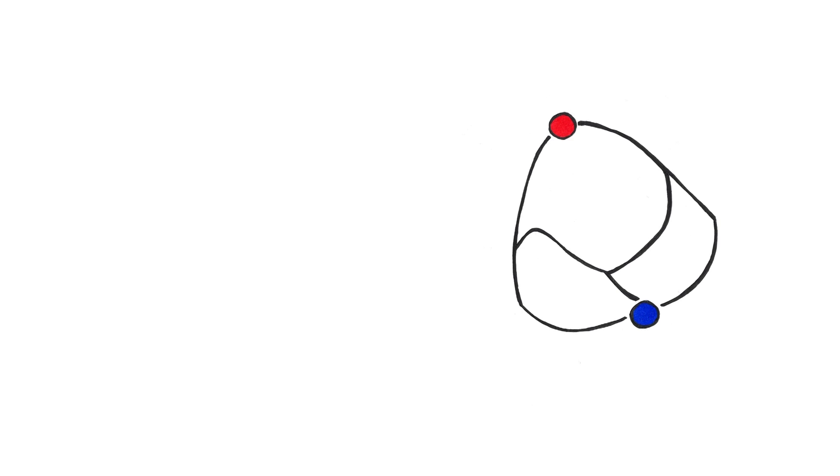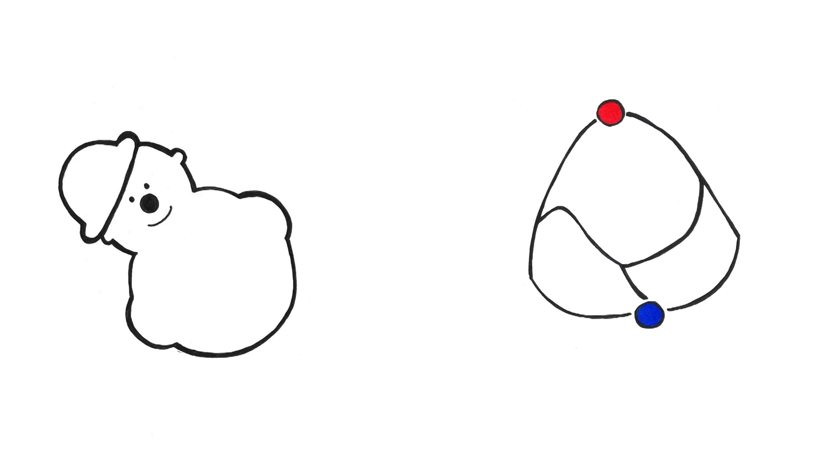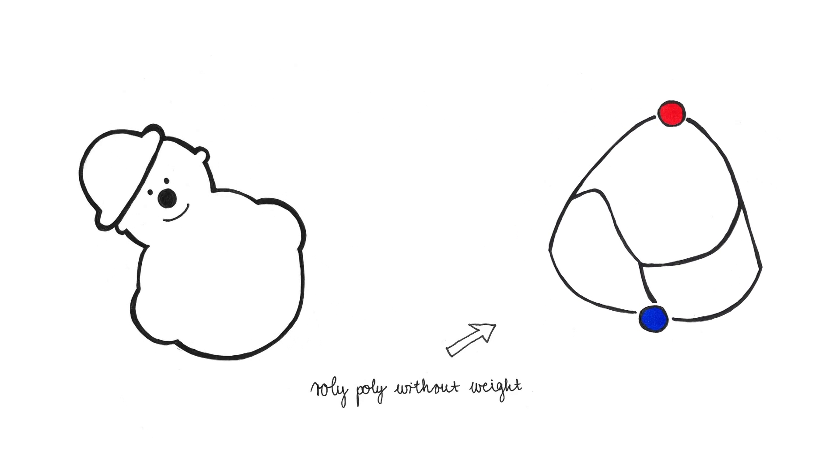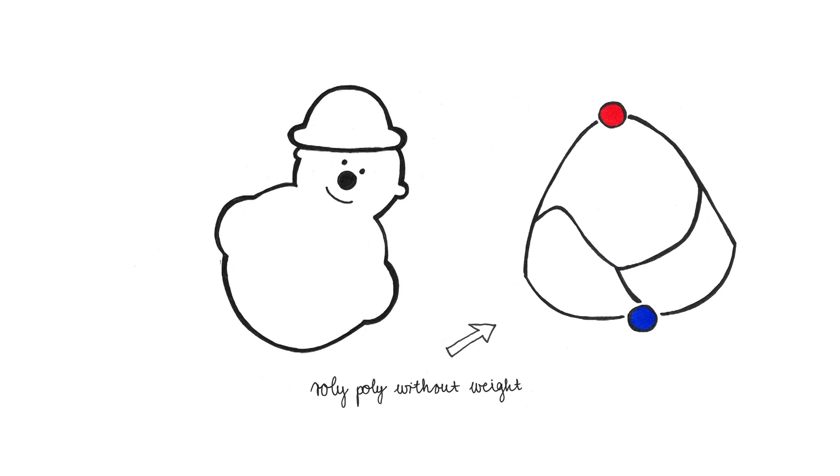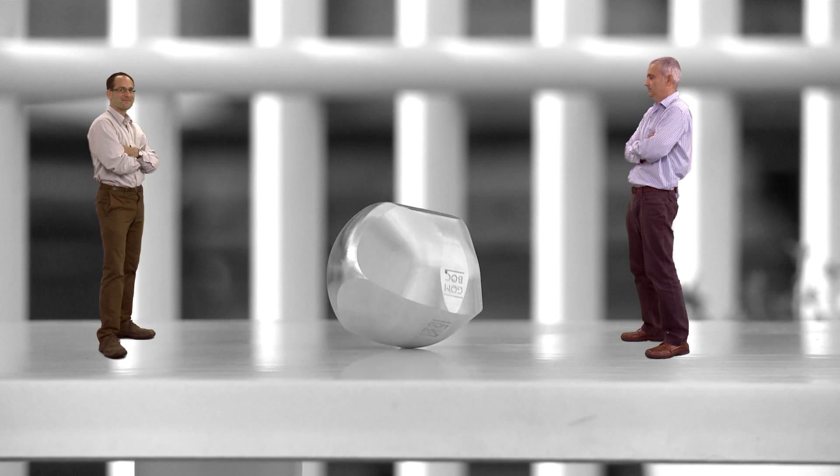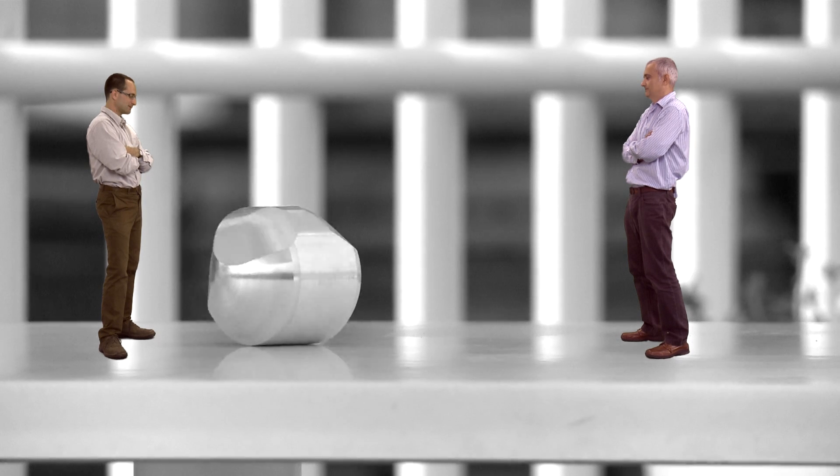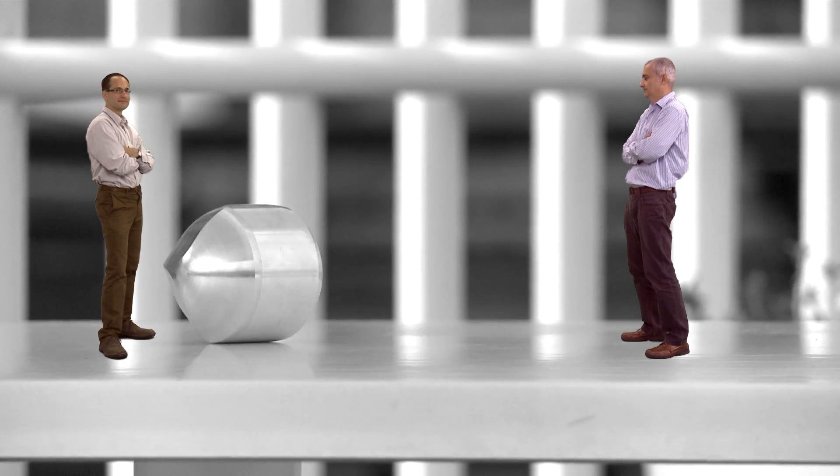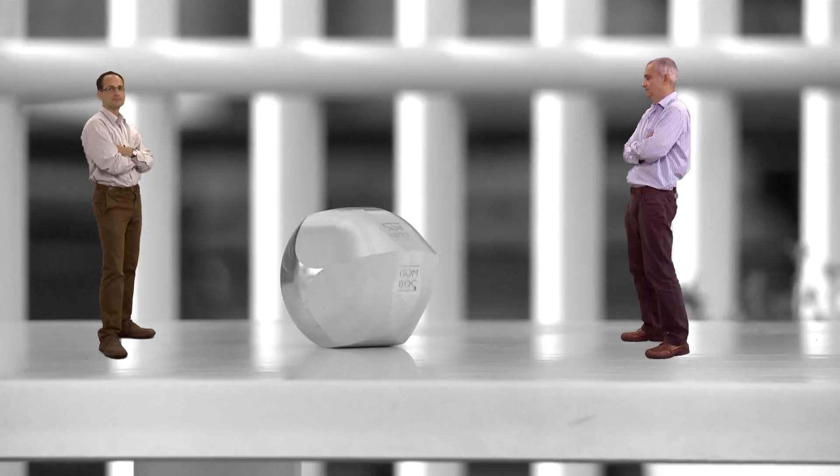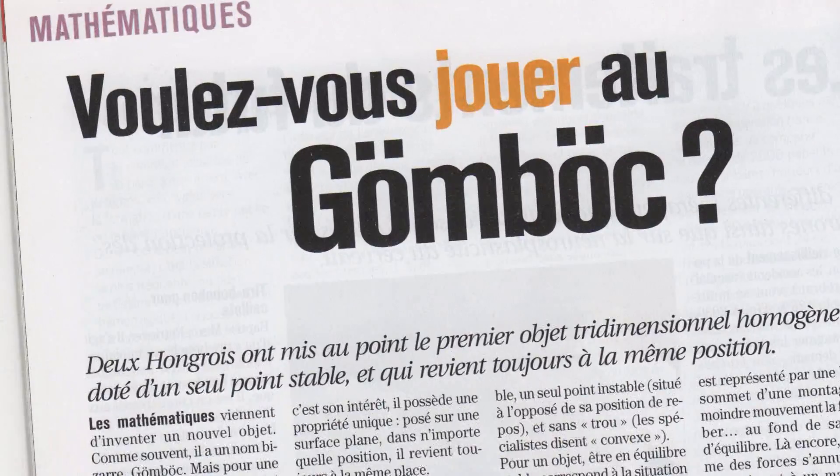Finally we managed to find this shape. The Gumbert behaves exactly like a roly-poly, but it doesn't have an added weight inside. It always returns to the stable point. We needed a very precise technology to realize this object, because it's very sensitive to imperfections.